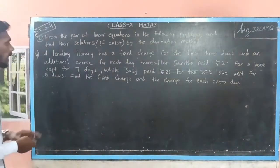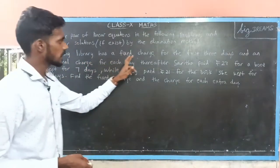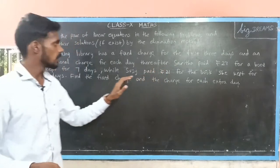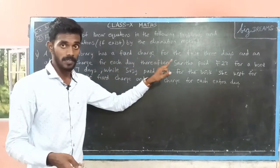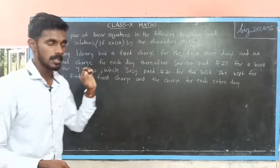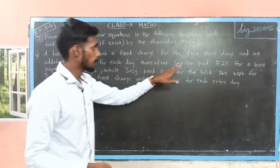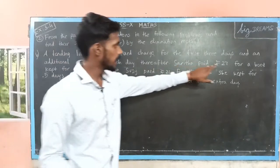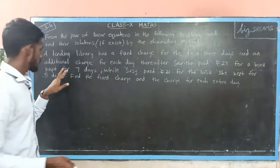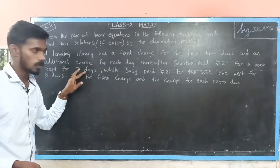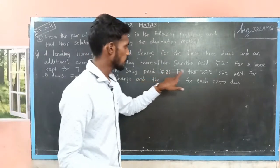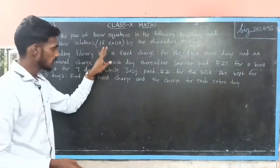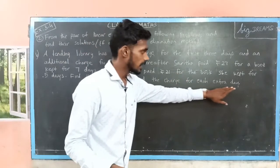Next, the fifth subdivision. A lending library has a fixed charge for the first three days and an additional charge for each day thereafter. So for the first three days, the book we are lending, we have to pay some fixed charge. Then after those three days end, we have to pay a certain amount for each extra day. Saritha paid rupees 27 for a book she kept for seven days. Then Susie paid rupees 21 for the book she kept for only five days. We have to find the fixed charge and the charge for each extra day.